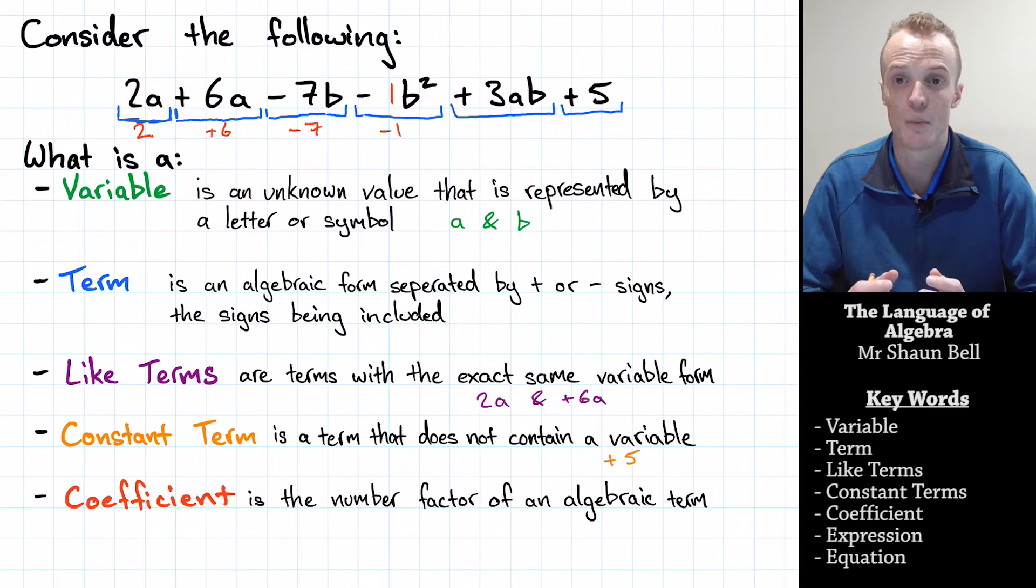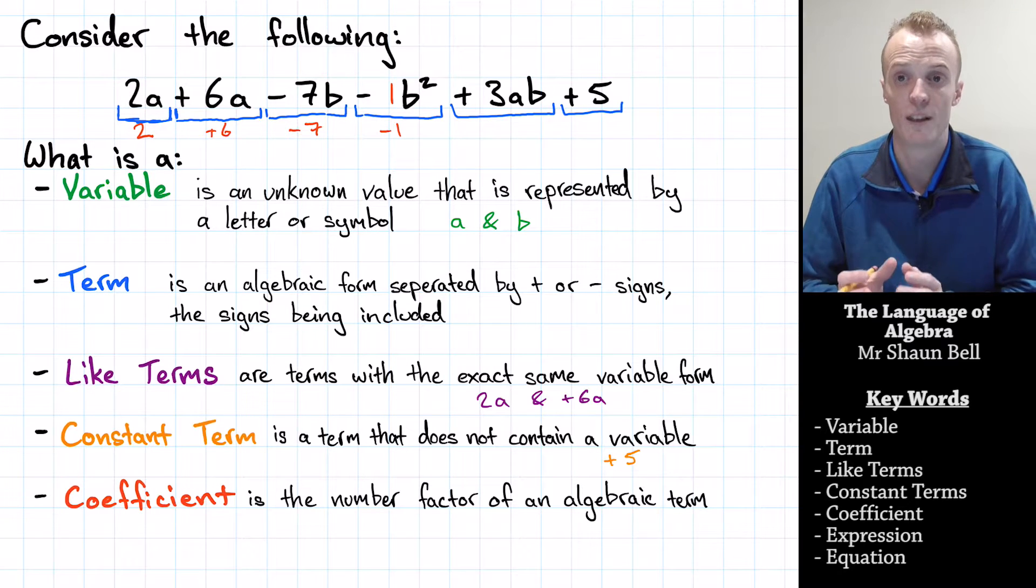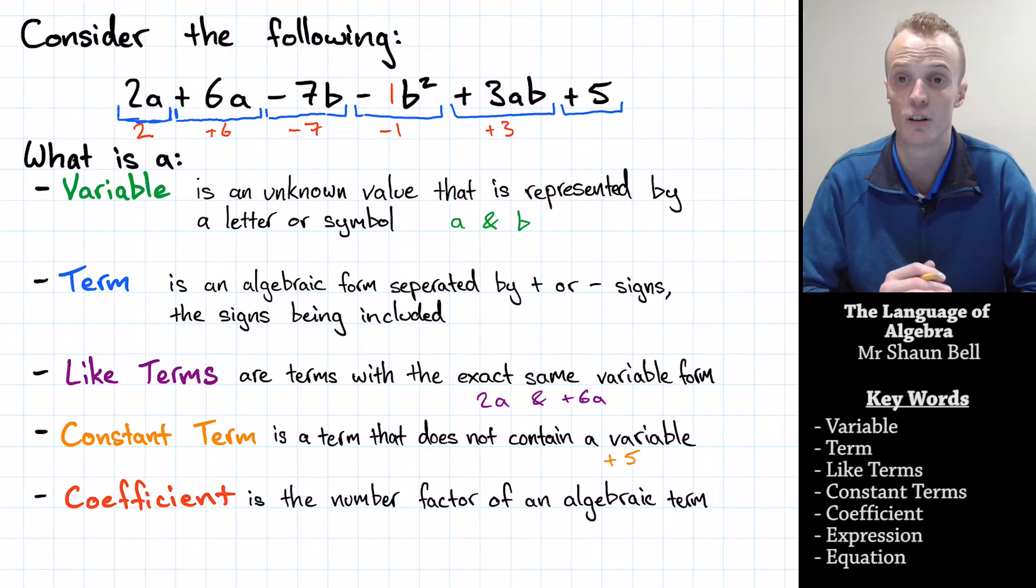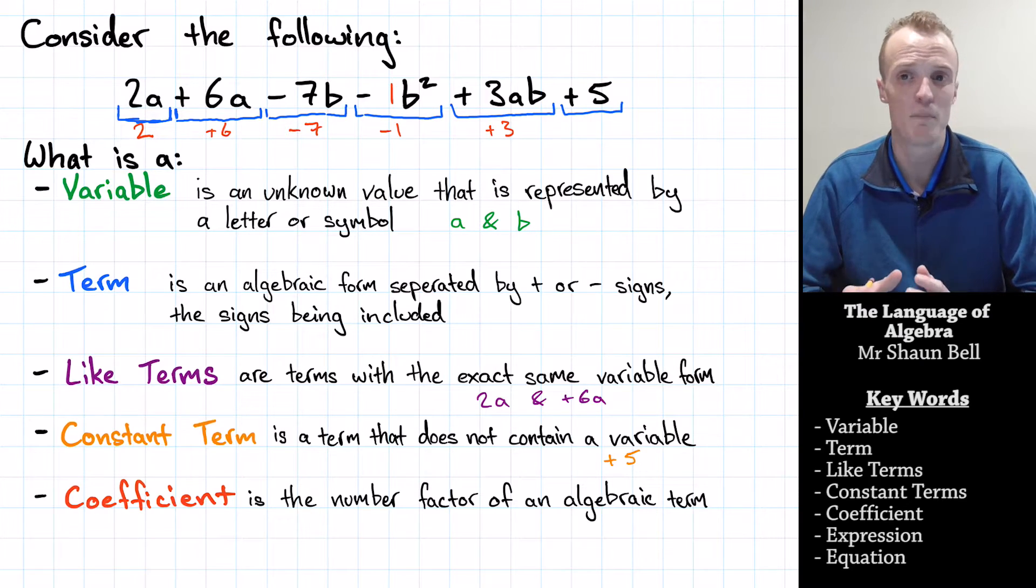Now, in our fifth term, we've got more than one variable. However, it's the number proportion of this term. The number portion of this is 3, so it's the plus 3 and we call that the coefficient of A, B. Now, in the sixth term, even though it has a number portion, we don't actually refer to this as a coefficient because we already call this a constant term.